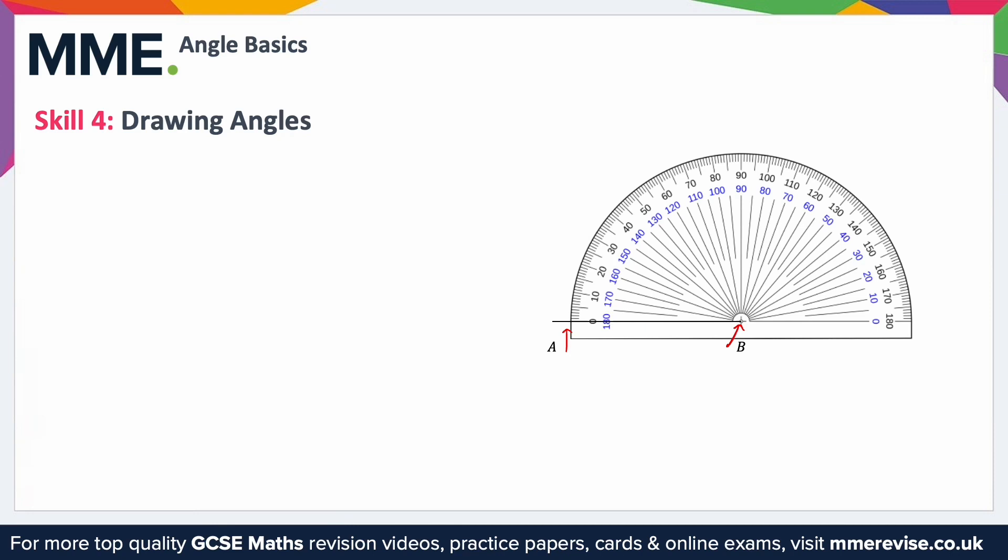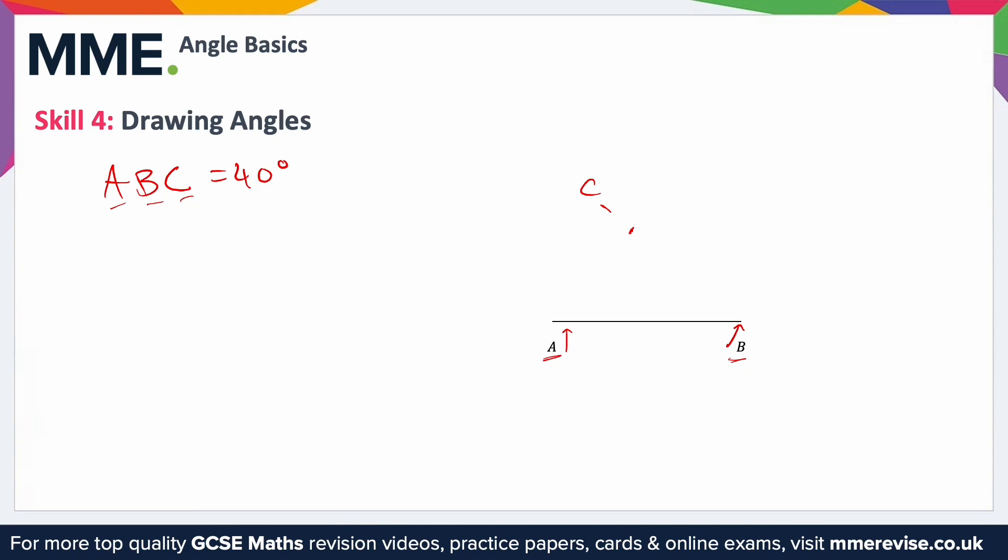If I want to mark an angle ABC to be 40 degrees then notice I lined up the zero on the outside scale with our line so I'm going to always use the outside scale, don't get the two confused. I'm going to find 40 degrees which is here then I'm just going to add a little mark on the outside of the protractor like this. I can label this C because we know we want it to be ABC and we've already got A and B. Then I can remove the protractor and draw in the line from B to C so we now know that this angle is 40 degrees.